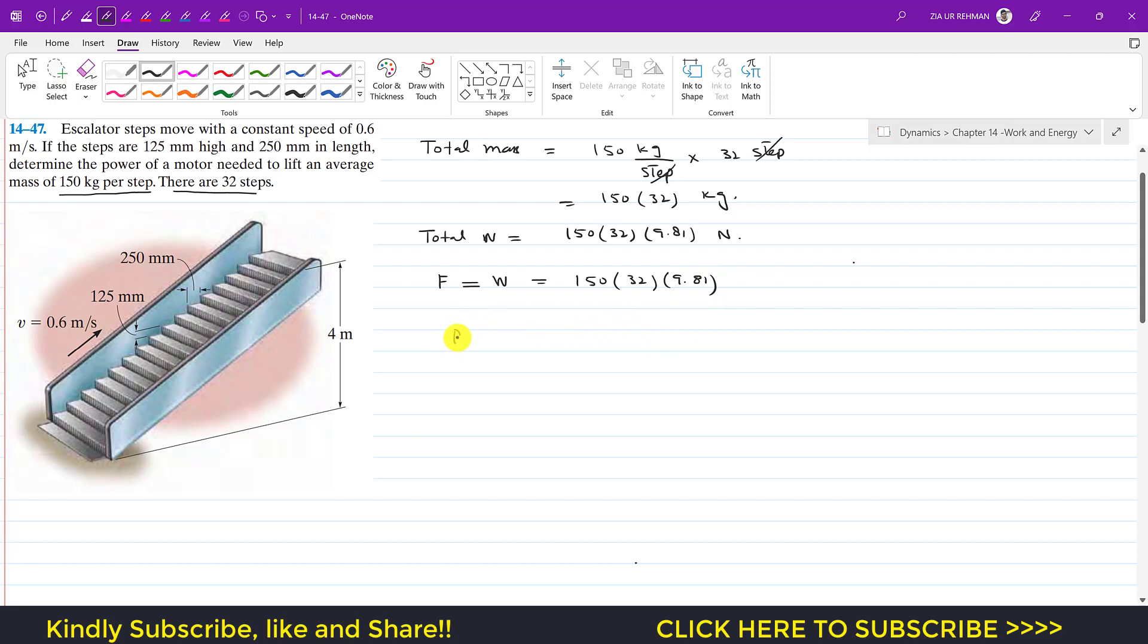As we know that the power is the dot product of the force and velocity. From the dot product we mean that either we have to find the velocity in the direction of the force, or we have to find the component of the force in the direction of the velocity.